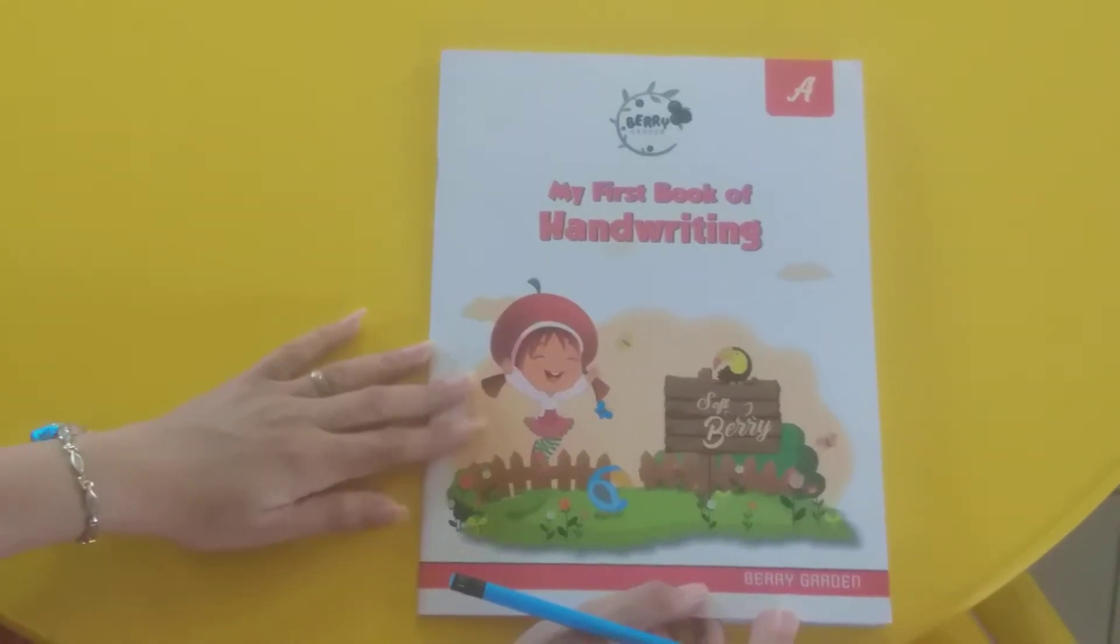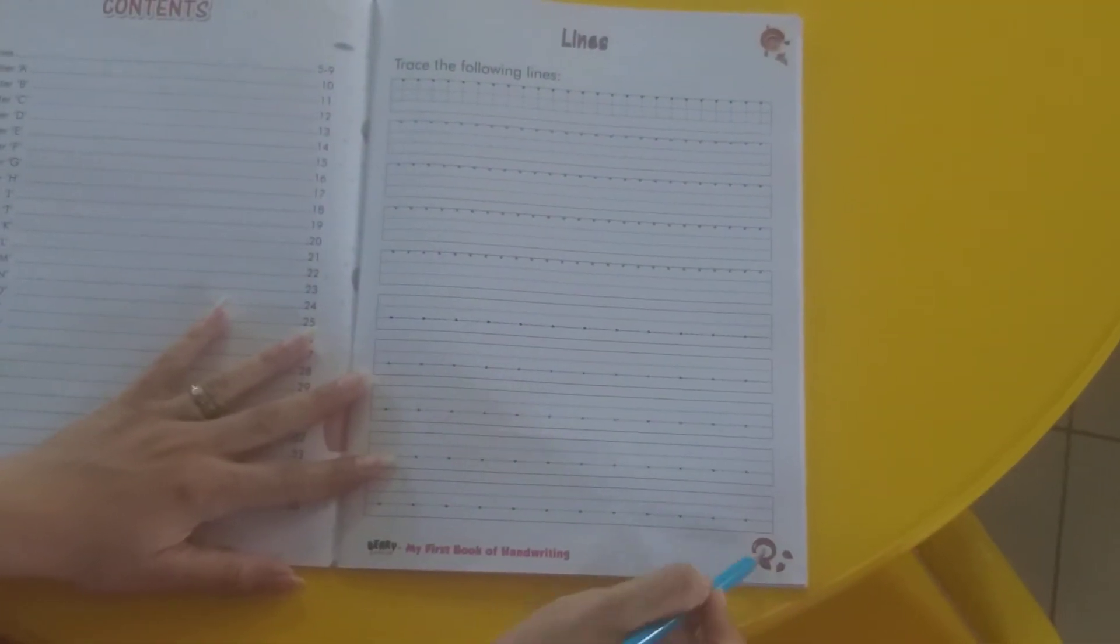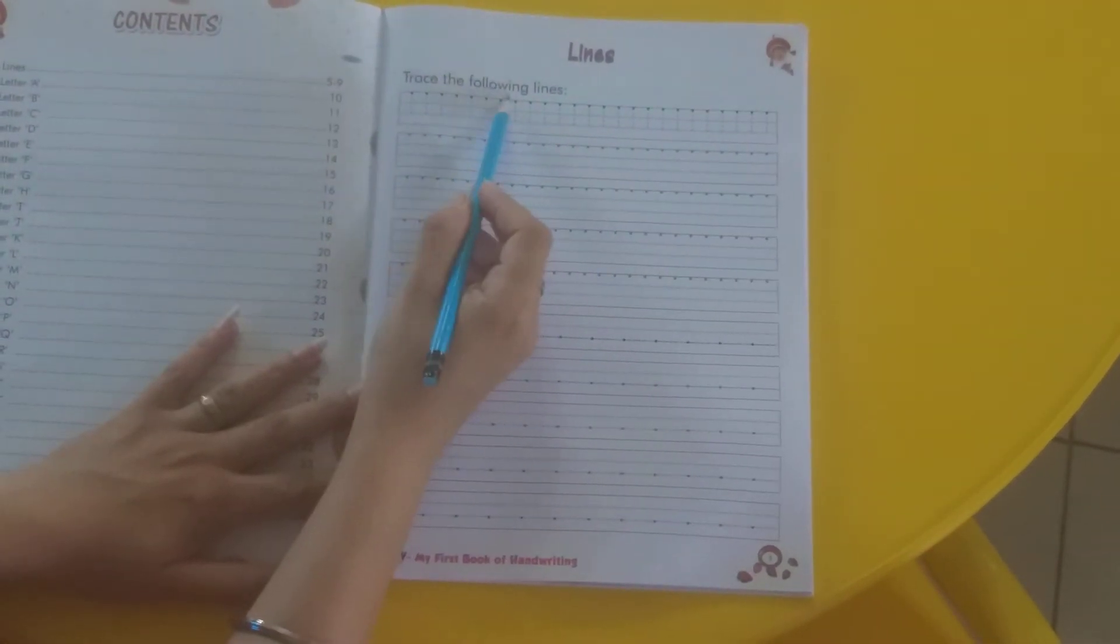So this is your new book. My first book of handwriting. And take out page number 5. Trace the following lines.